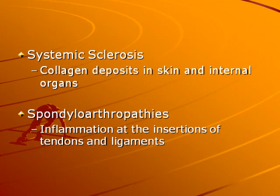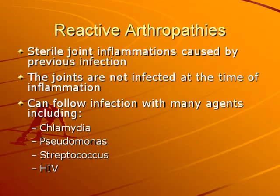A couple of other disorders just to be familiar with: Systemic sclerosis, also known as scleroderma, is where you have collagen deposits in the skin and the internal organs, which can obviously lead to problems. Spondyloarthropathies are inflammation at the insertions of tendons and ligaments. We're not going to go into detail on those — just be familiar with the terminology.